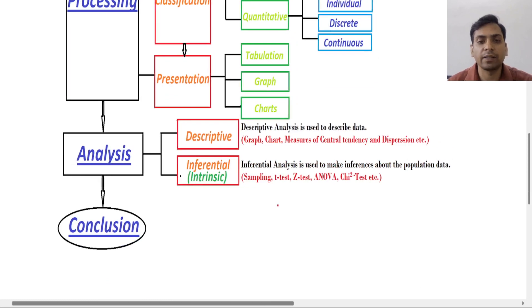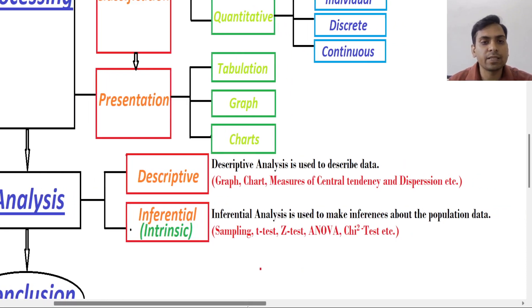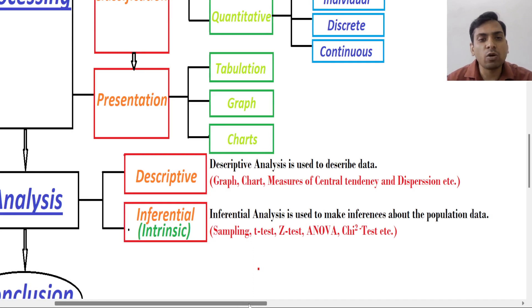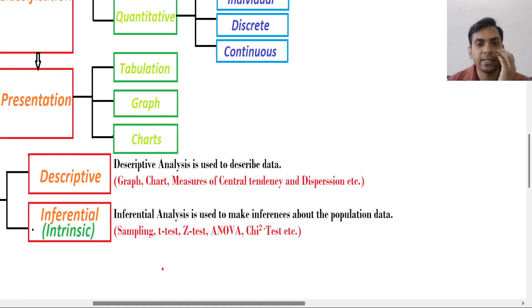In analysis there are two things: first is descriptive analysis and second is inferential analysis. Sometimes these are seen as types of statistics — descriptive and inferential. Inferential is also known as intrinsic analysis. So what is the difference between descriptive analysis and inferential analysis?